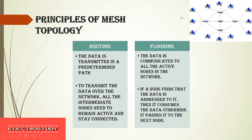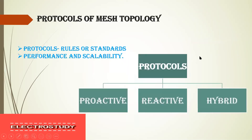These are the two principles available for mesh topology. Next, we will see the protocols of mesh topology. The word protocol means a standard or rule followed by the topology — only by following certain rules and standards does the topology give good performance and scalability. Based on these protocols, mesh topology is divided into three types: proactive, reactive, and hybrid protocol.